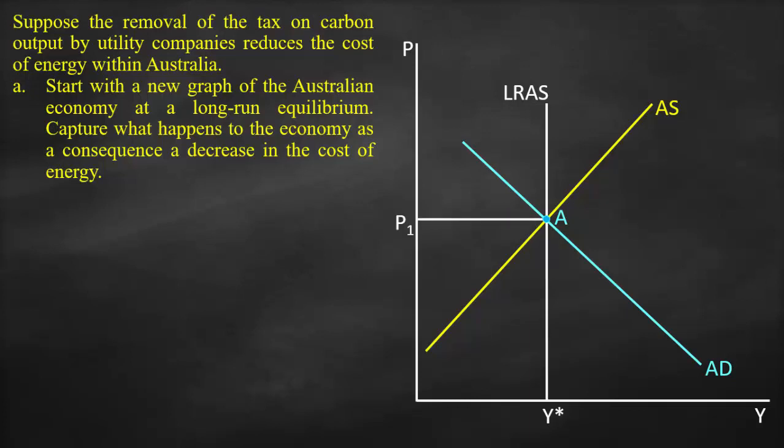Because of the removal of the tax on carbon, this would result in lower cost of production. Consequently, both the short-run aggregate supply curve and the long-run aggregate supply curve will shift to the right, but the short-run aggregate supply curve will shift with a bigger shift compared to the long-run aggregate supply.